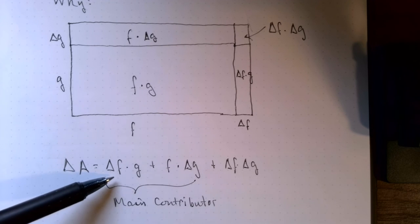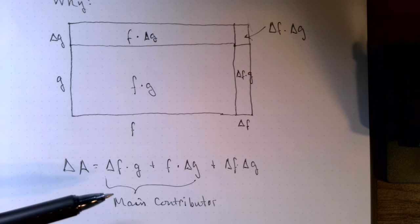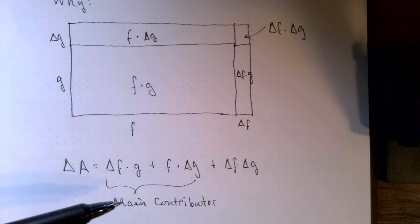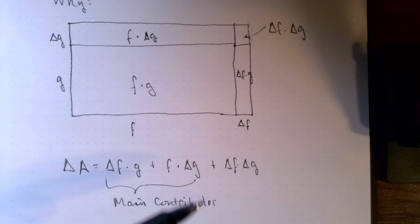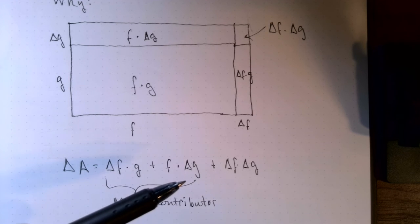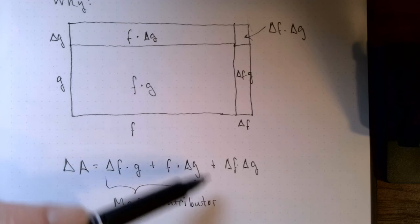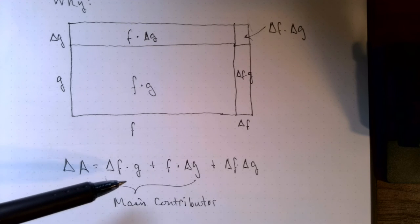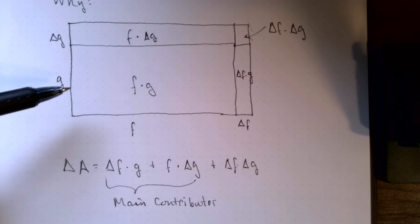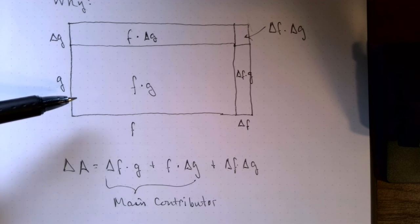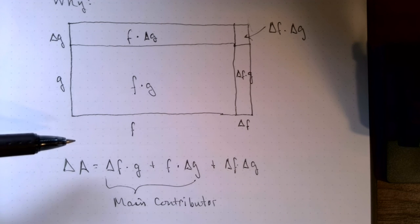And if you notice, if we think about taking limits, delta F would go to derivative of F, and delta G would go to derivative of G. So you can see, that's why the product rule has to look the way it does. It can't be anything else. And that rule is named after Gottfried Wilhelm Leibniz.